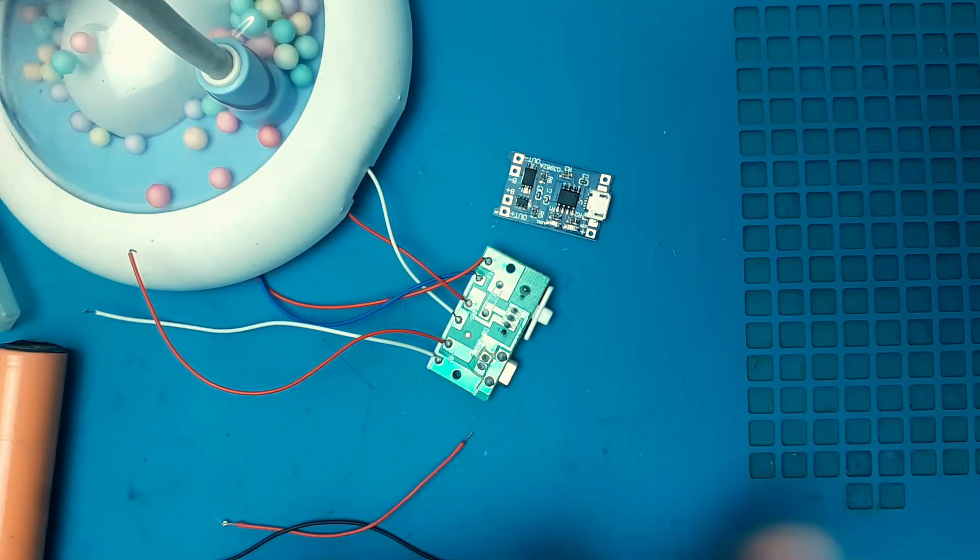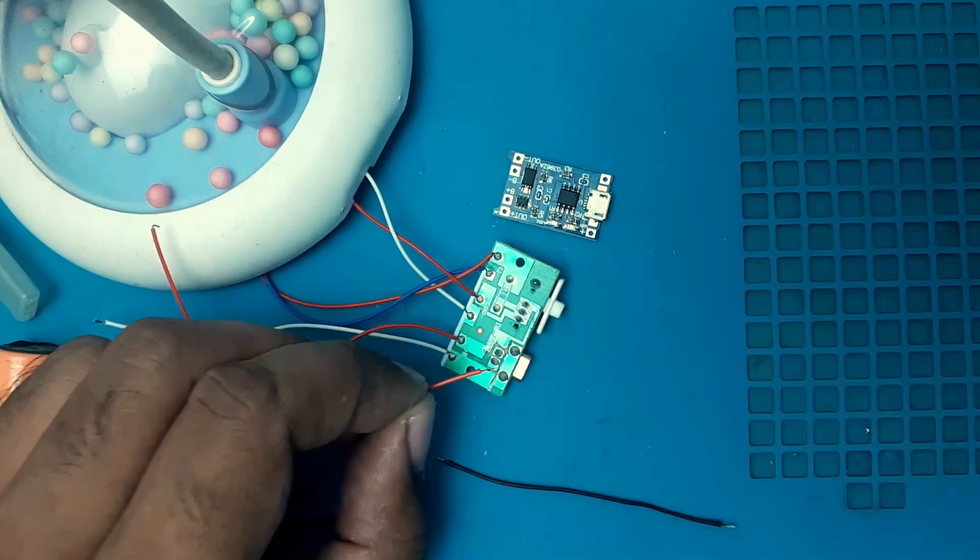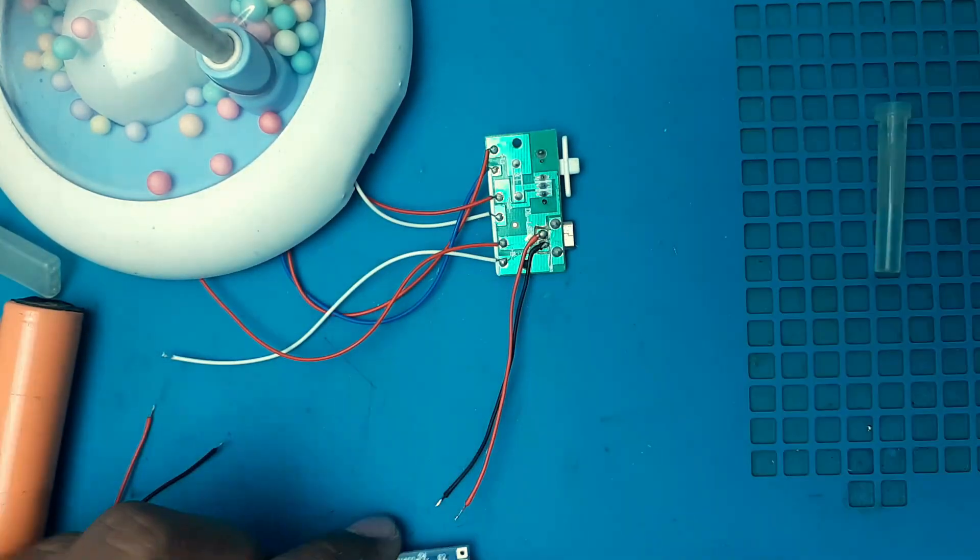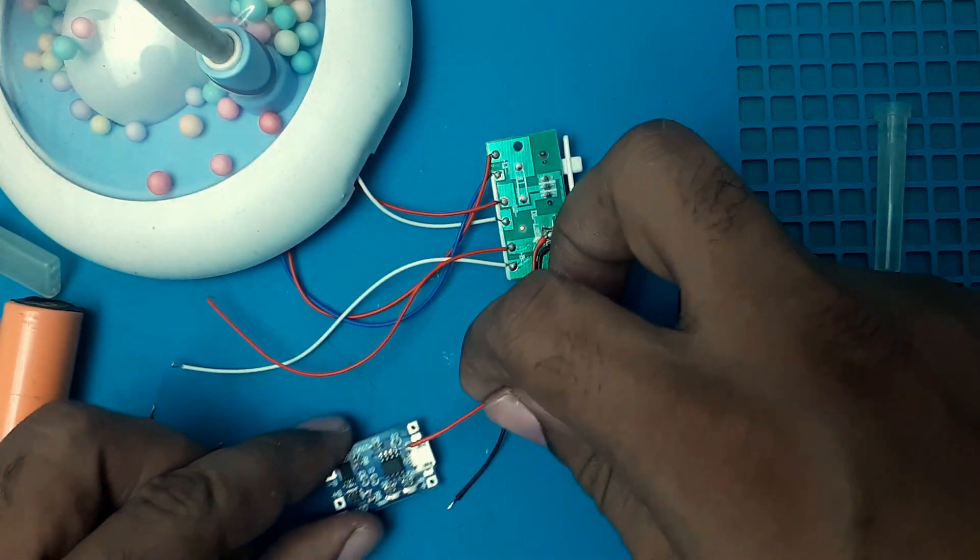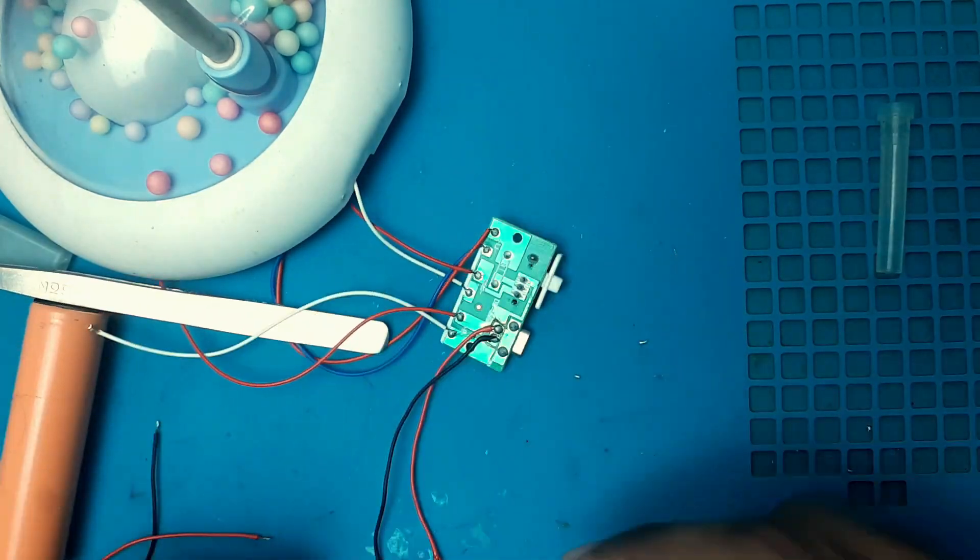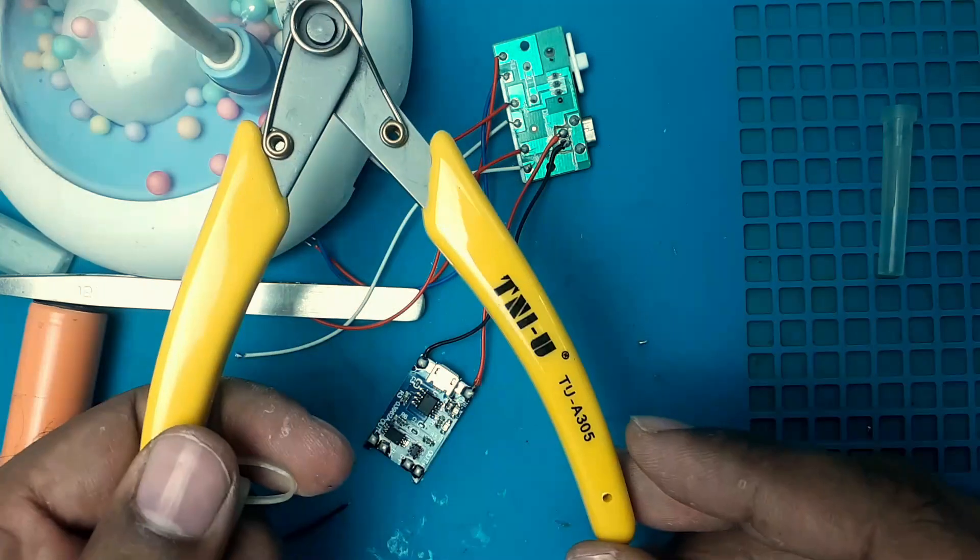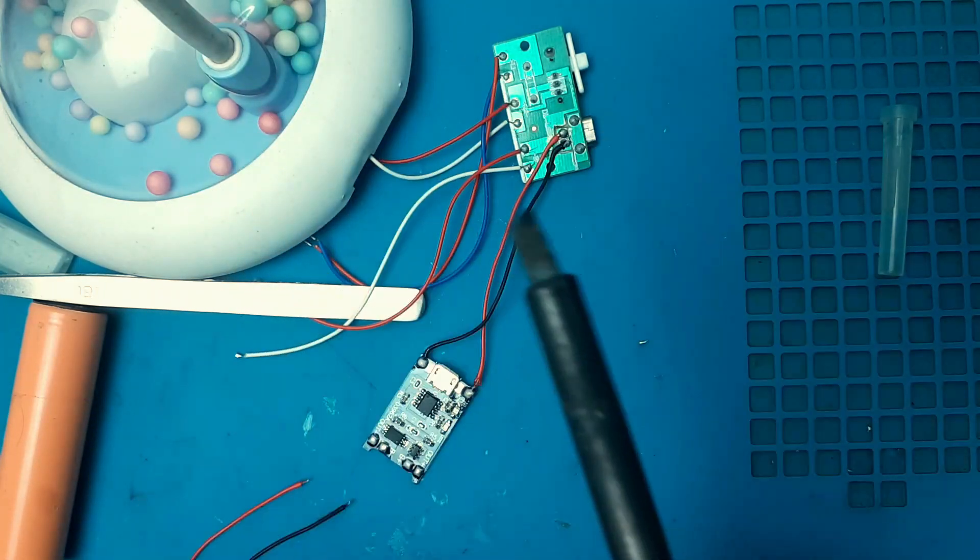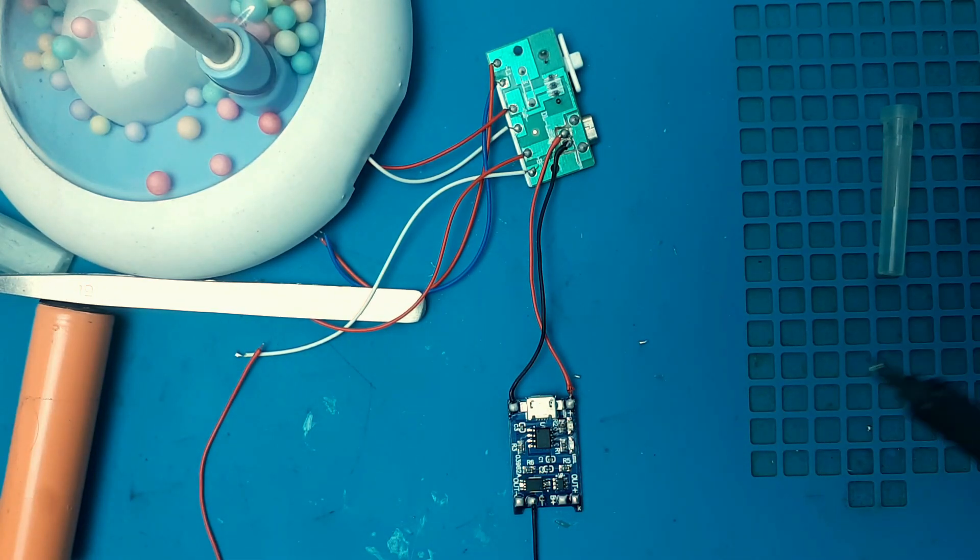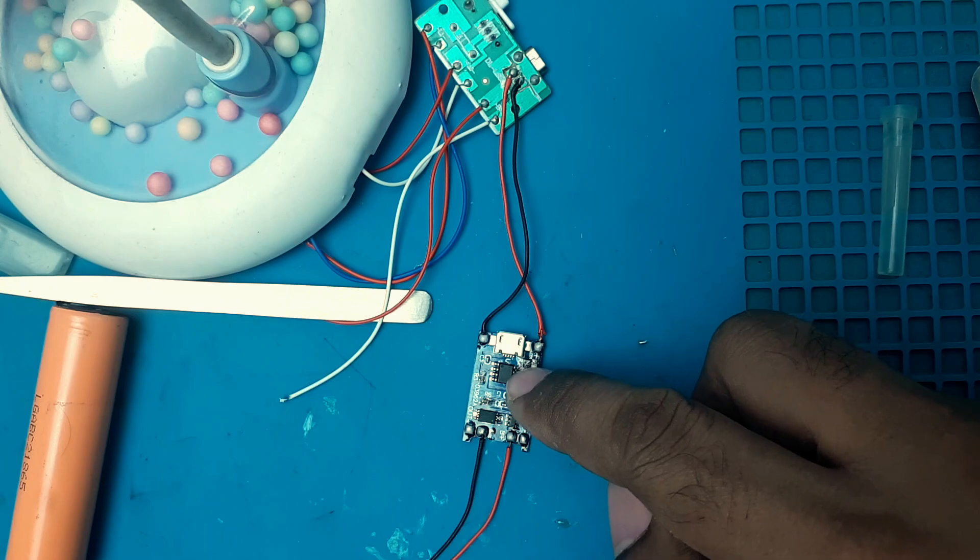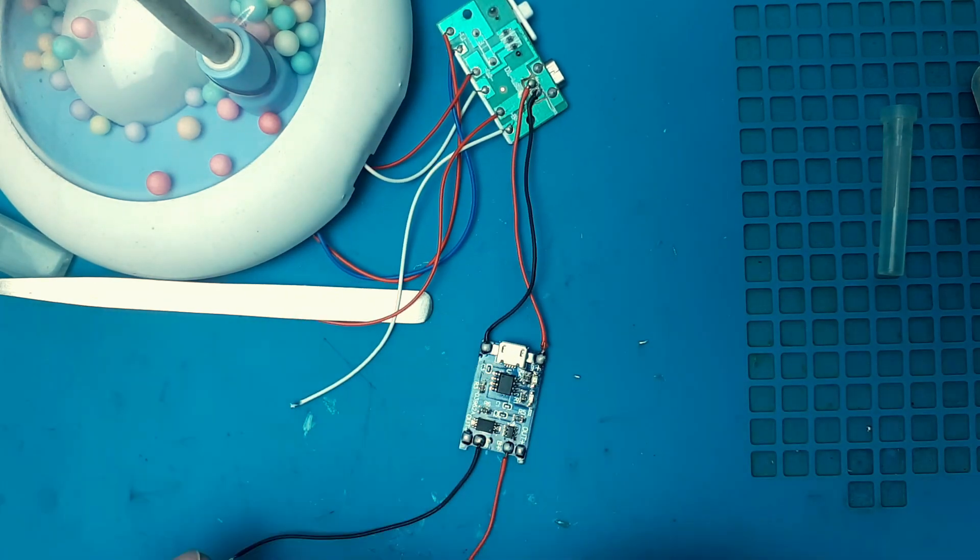This one is positive and this is negative. So it will go to this terminal. Input terminal. Now negative input. Then voltage in. Voltage out to the battery. This is my new cutting pliers. Negative battery joint. Positive battery joint. Charging voltage in. Voltage to the battery. And okay.